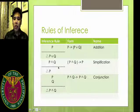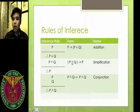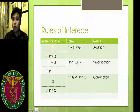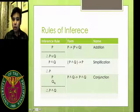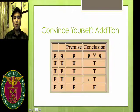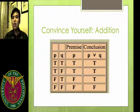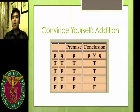What about simplification? Simplification states that for a conjunction P and Q, you can conclude either P or Q. What about conjunction? For P and Q, you can conclude P and Q. Here's an example of a truth table to prove the validity of a certain rule of inference — we will be using addition.